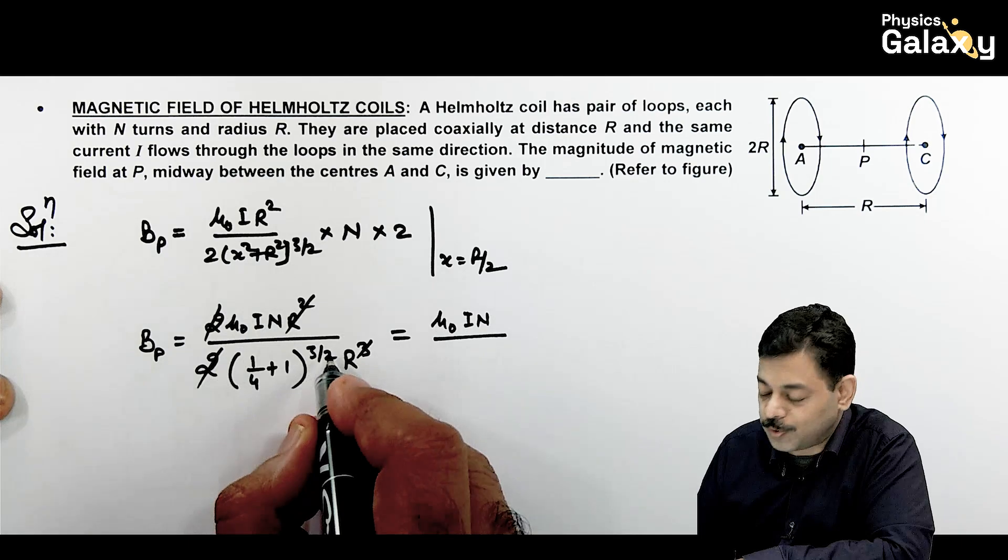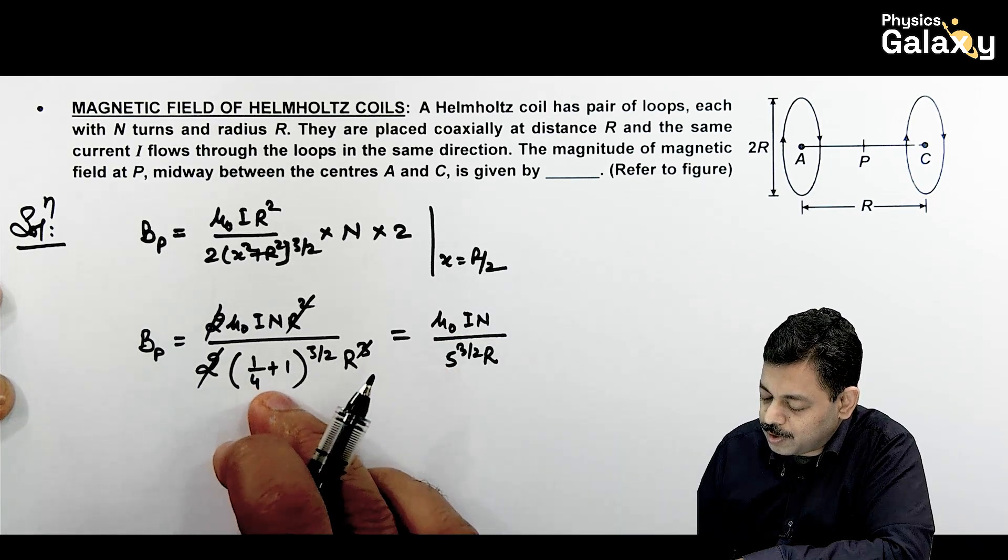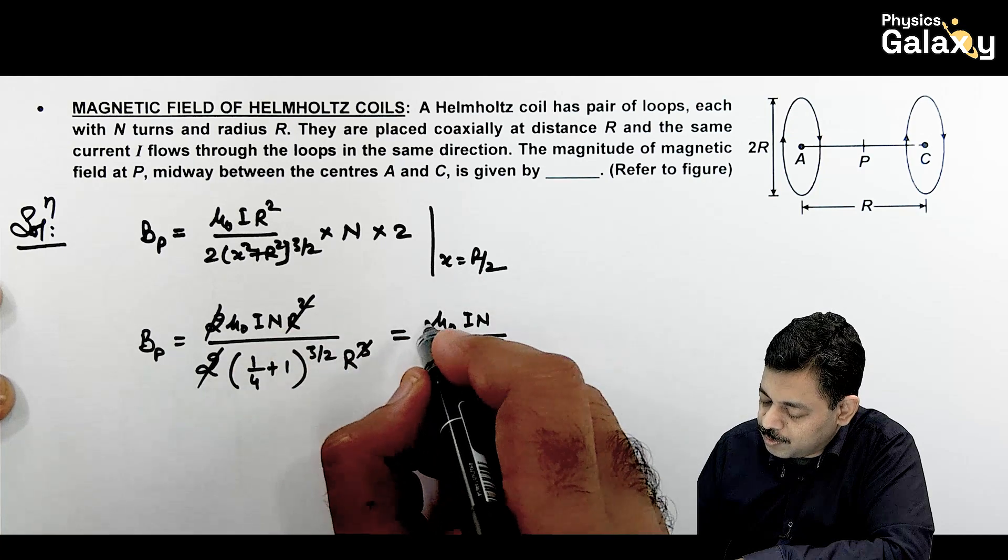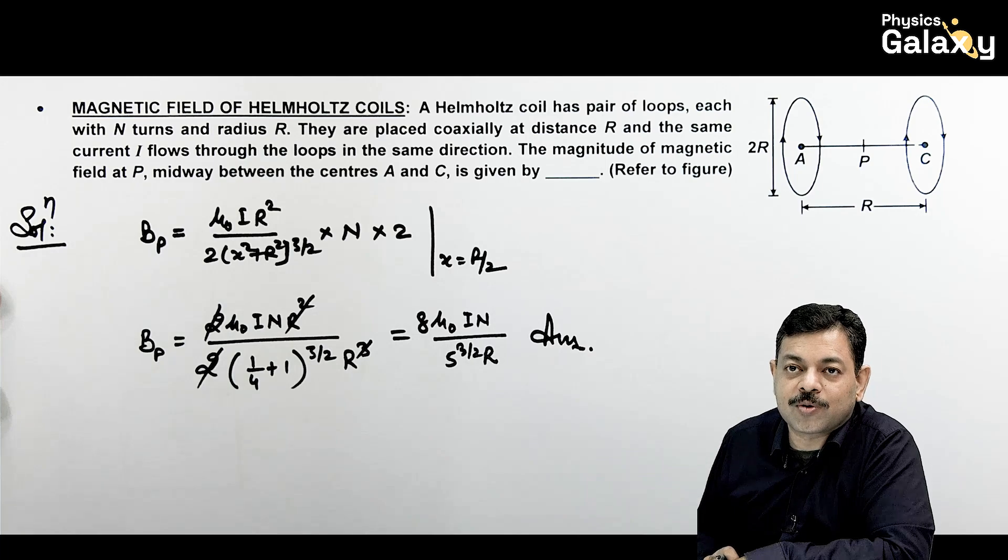This is mu naught i n divided by (5/4) to power 3/2 times r. 5 to power 3/2 is multiplied, and 4 to power 3/2 becomes 8. So that's the result we are getting as an answer to this question.